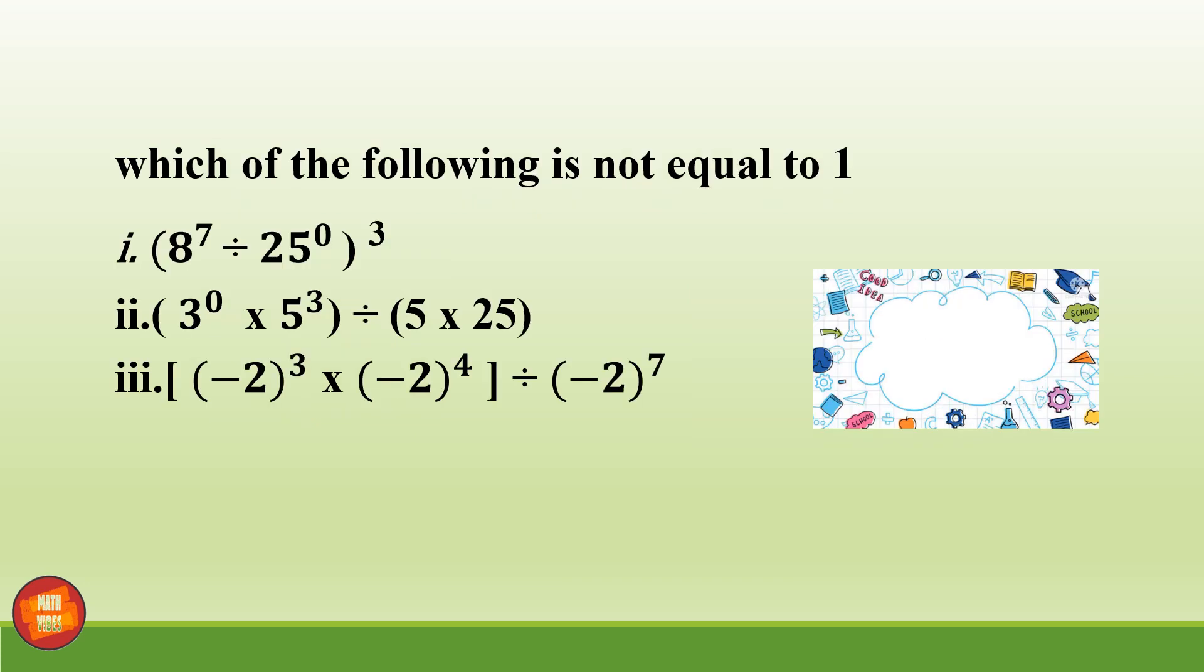Next question, which of the following is not equal to 1? Correct answer is option number 1. Because in the second part it is 3 raised to power 0 which becomes 1, so 5 cube divided by 125 which is also 5 cube, so they both give you 1. Similarly in the third option, minus 2 whole cube into minus 2 raised to power 4 is minus 2 raised to power 7 divided by the same number, so the answer is 1. Only the first option will give you 8 raised to power 7 whole cube.